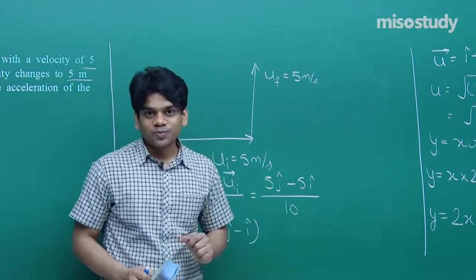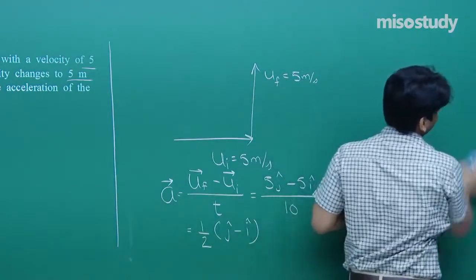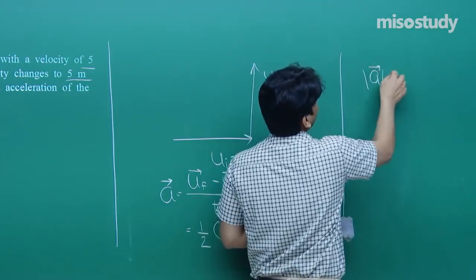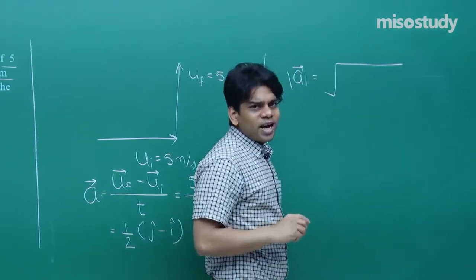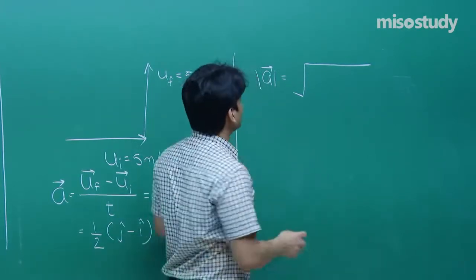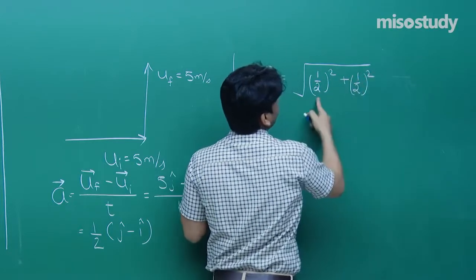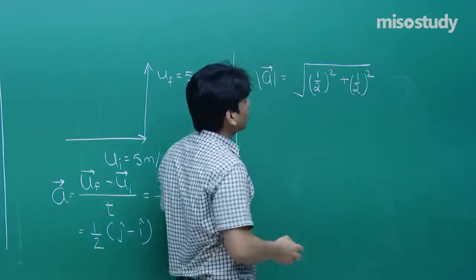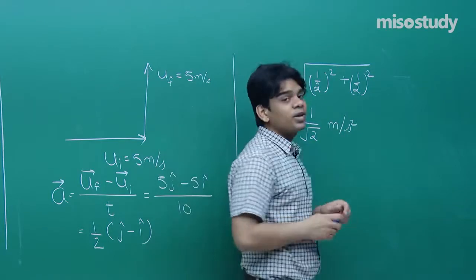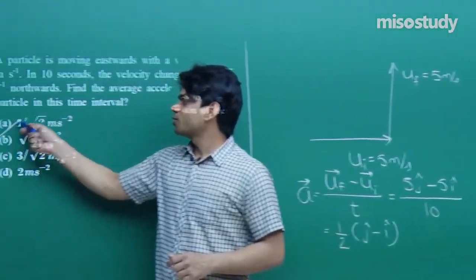The magnitude of acceleration = √((1/2)² + (1/2)²) = √(1/4 + 1/4) = √(1/2) = 1/√2 m/s². So the magnitude of acceleration is 1/√2 m/s², which matches option a. We were required only the magnitude, which we have solved.